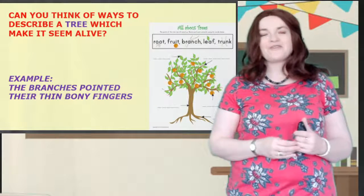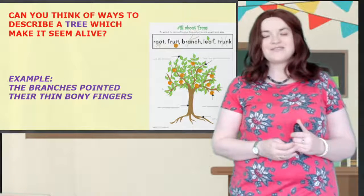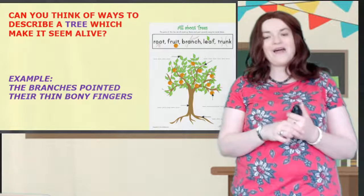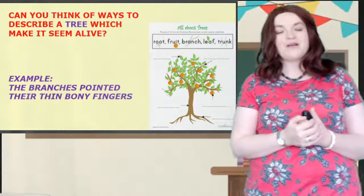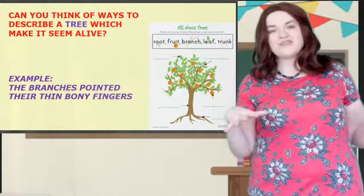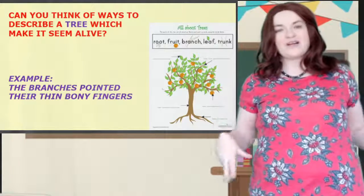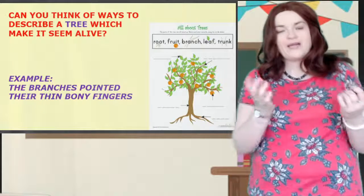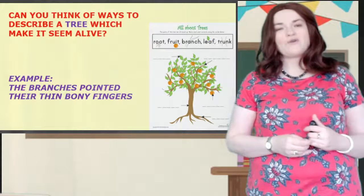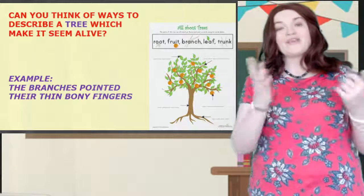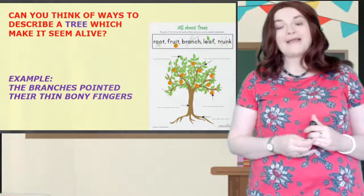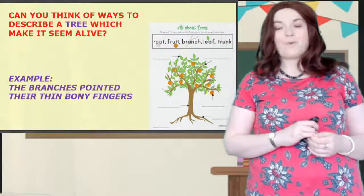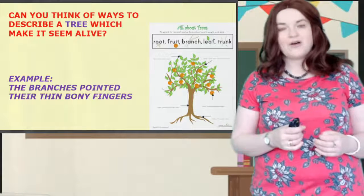So your first task: can you think of ways to describe a tree to make it seem alive? Think about different parts of a tree — branches, twigs, the big trunk, leaves, fruit on it. Try and think of ways to describe the tree or parts of it making it seem alive. I've given you a wee example: the branches pointed their bony thin fingers.